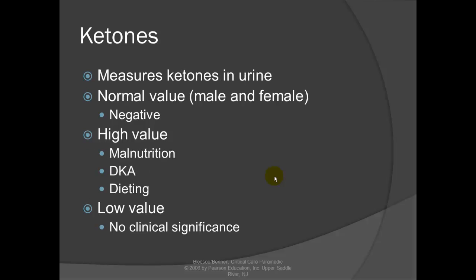Ketones: measures ketones in the urine. Normal value is negative. A high value may indicate malnutrition, as ketones are a byproduct of fat metabolism. It may also indicate DKA — diabetic ketoacidosis — which involves ketoacidosis and lactic acidosis, or a starvation diet. Low values have no clinical significance.